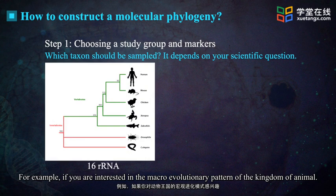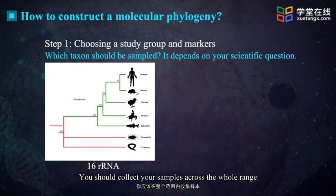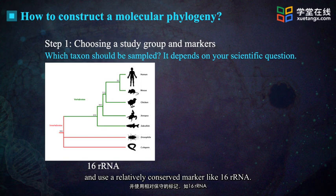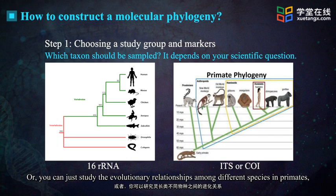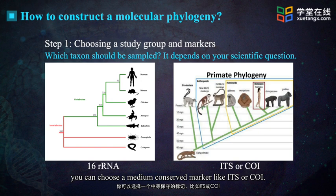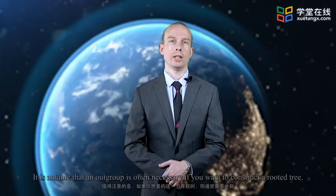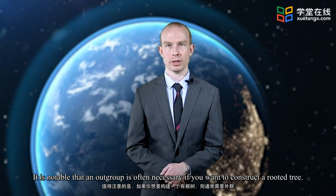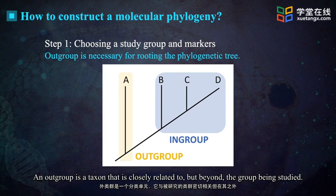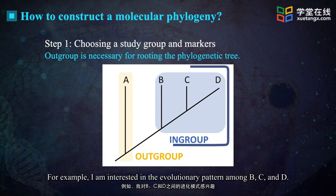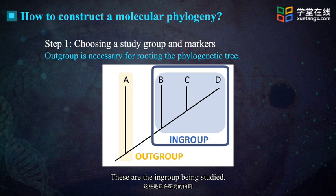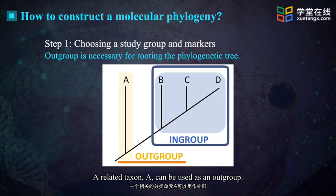For example, if you are interested in the macroevolutionary patterns of the kingdom Animalia, you should collect your samples across the whole range and use a relatively conserved marker, like 16S rRNA. Or you can study the evolutionary relationships among different species in primates and choose a medium conserved marker, like ITS or COI. It is notable that an outgroup is often necessary if you want to construct a rooted tree. An outgroup is a taxon that is closely related to, but beyond, the group being studied. For example, if you are interested in the evolutionary pattern among B, C, and D — the in-group taxa — a related taxon A can be used as an outgroup.